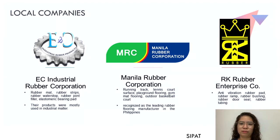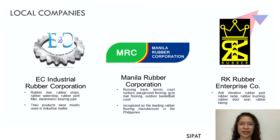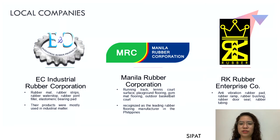Lastly, for local companies, we have RK Rubber Enterprise Corporation, a reputable rubber producer in the Philippines since 1990. They supply and manufacture the finest grade rubber goods across the nation, providing superior design rubber products including seals, bumpers, gaskets, shock absorbers, rubber pads, rubber ramps, rubber bushings, rubber door seals, and tubings. RK Rubber also offers food grade rubber for applications involving consumables and other essential rubber components.